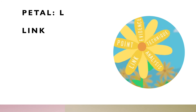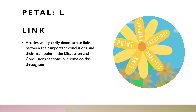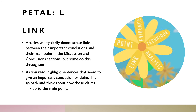Moving on to Link: articles will typically demonstrate links between their important conclusions and their main point in the discussion and conclusion sections. In humanities fields, articles often do this throughout the paper, linking major conclusions back to the thesis in the introduction. As you read, highlight sentences that give an important conclusion or claim, then think about how those claims link up to the main point.